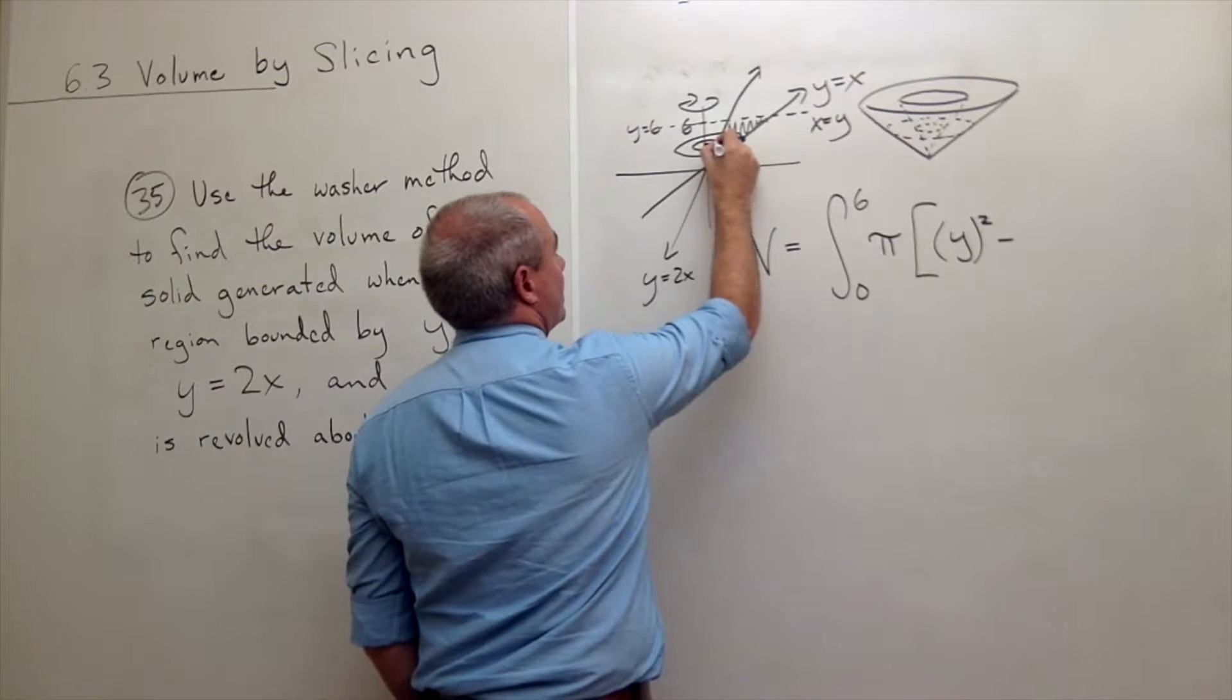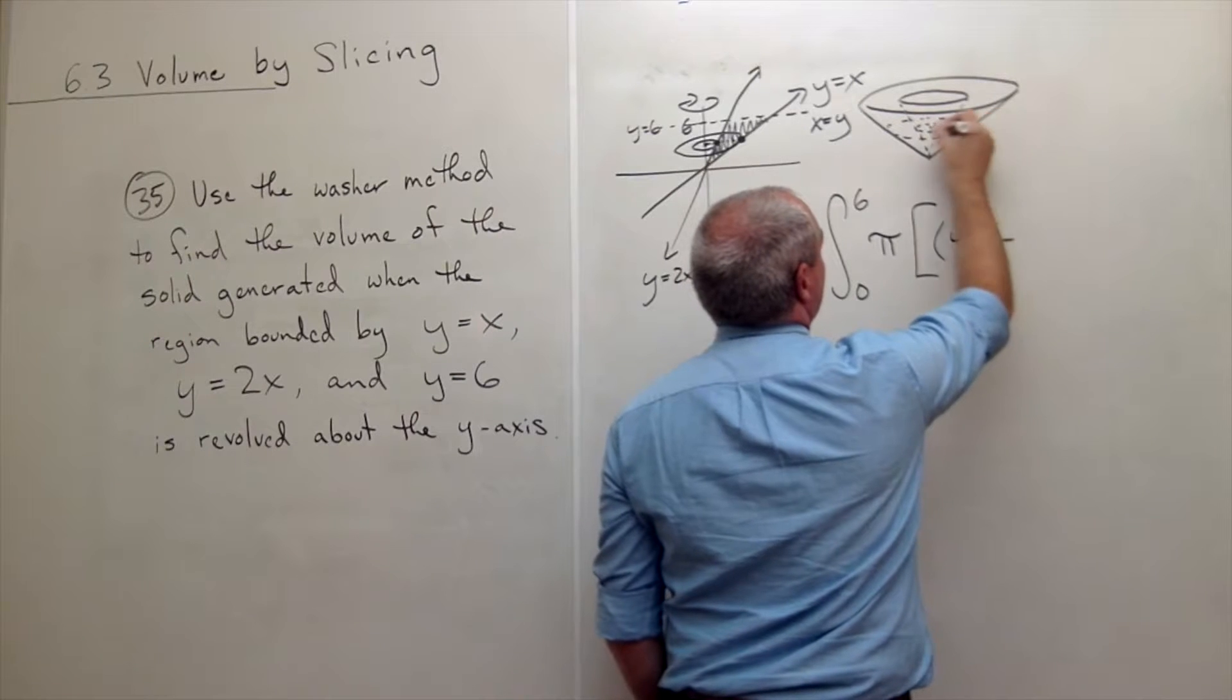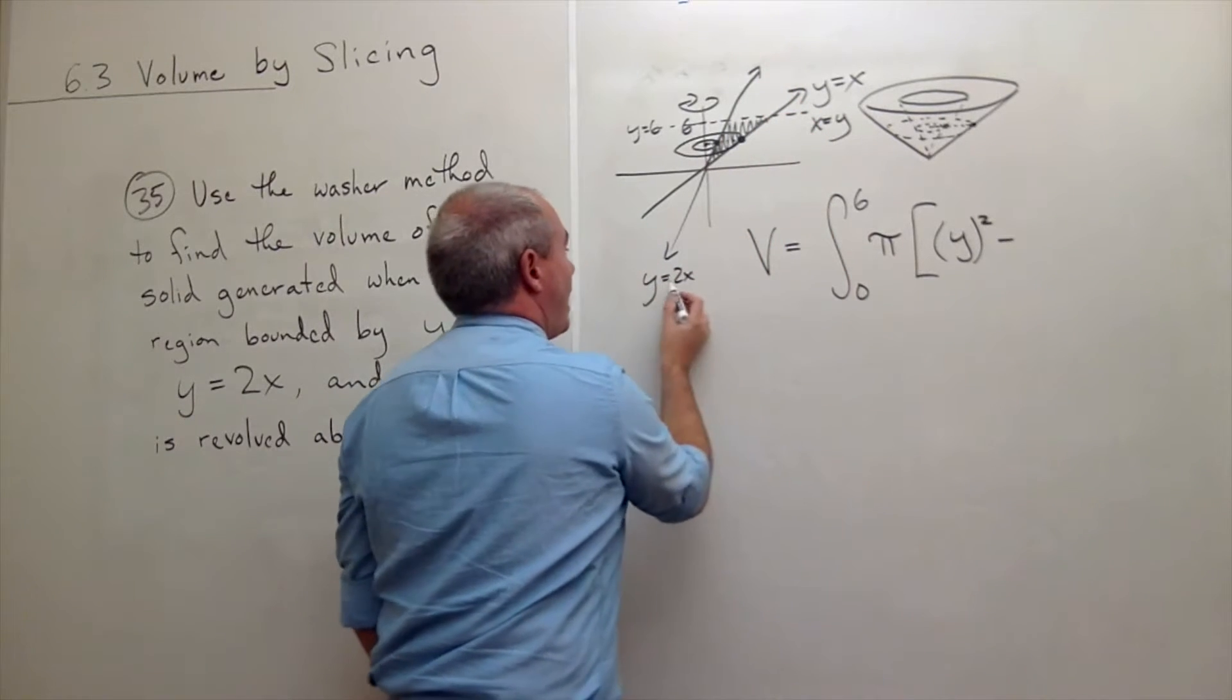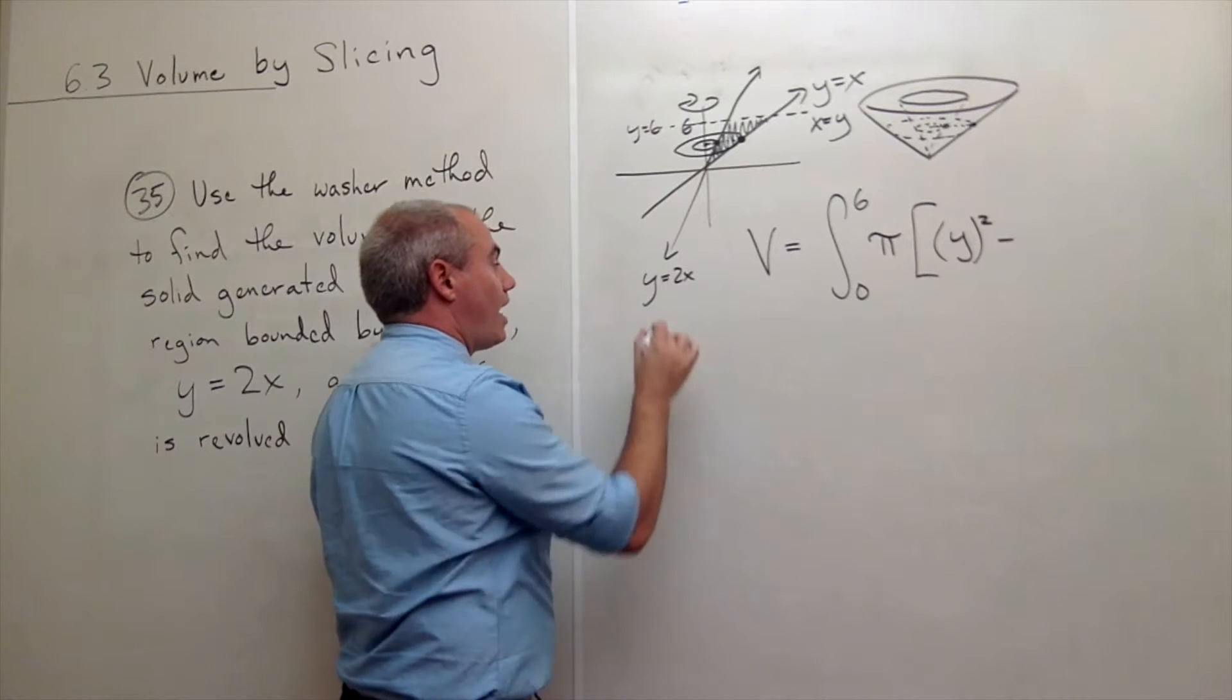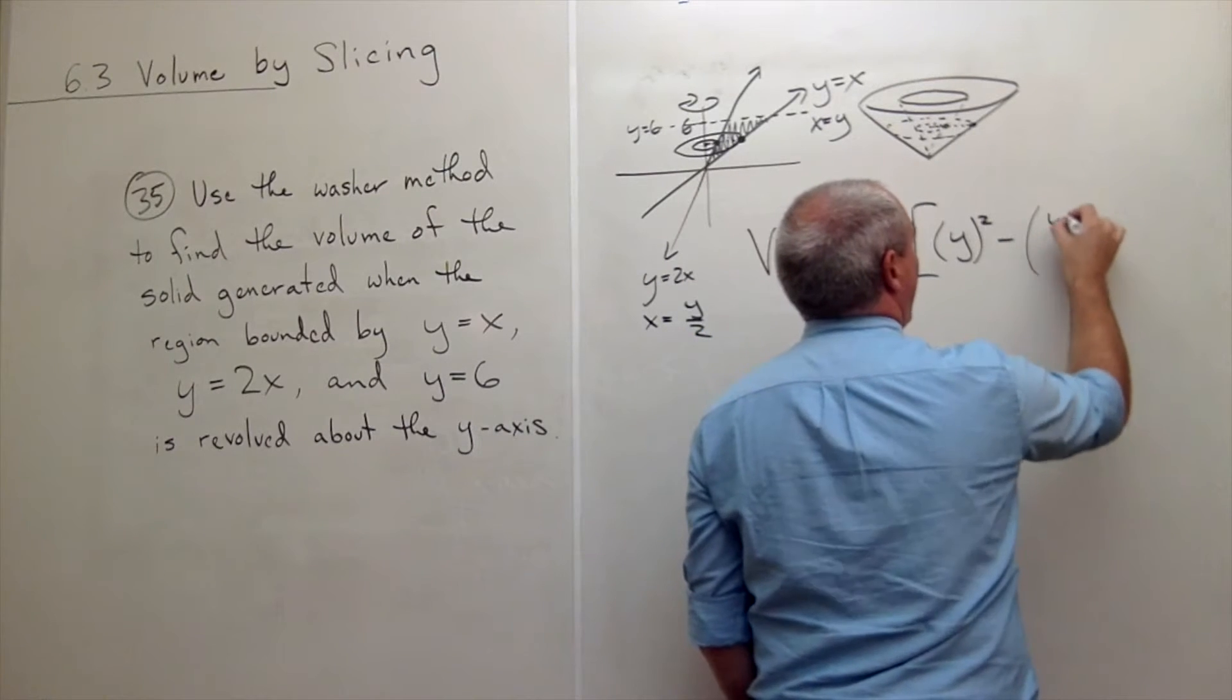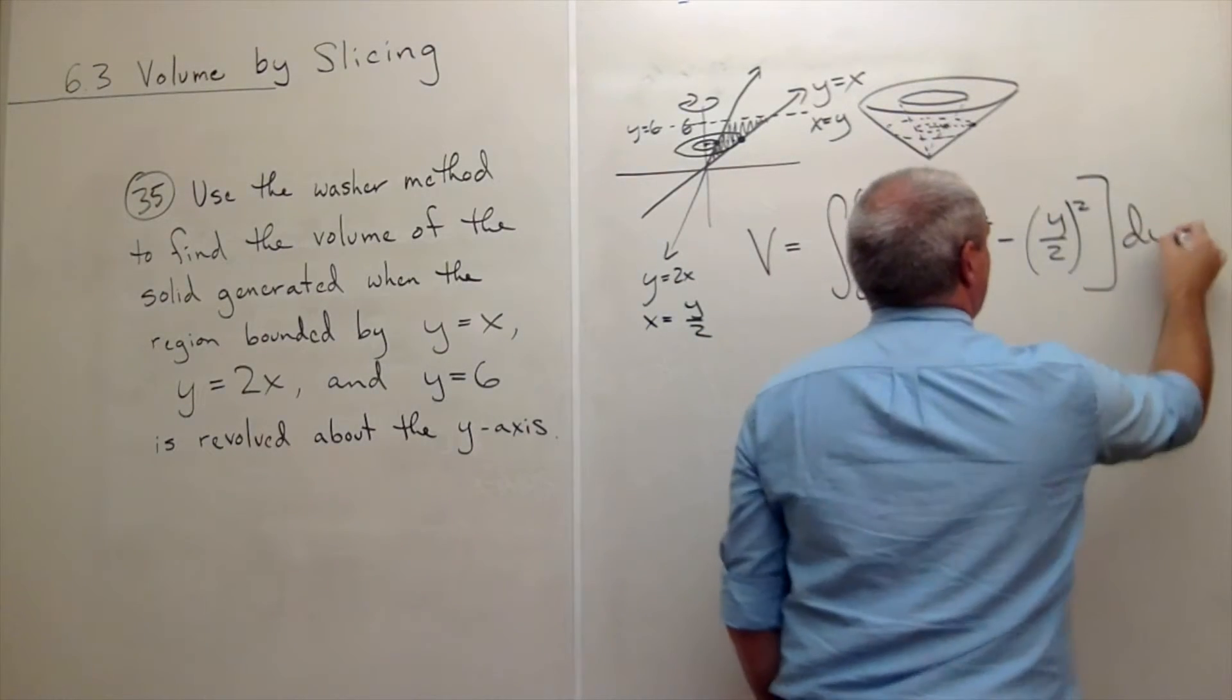Minus the inner radius squared. Well, the inner radius, I just go to this piece. If you're looking out here, the outer radius is here, the inner radius is here. So the inner radius is the function y equals 2x. But if I think of that as a function of y, that's x is equal to y over 2. So I need to subtract y over 2 squared dy.